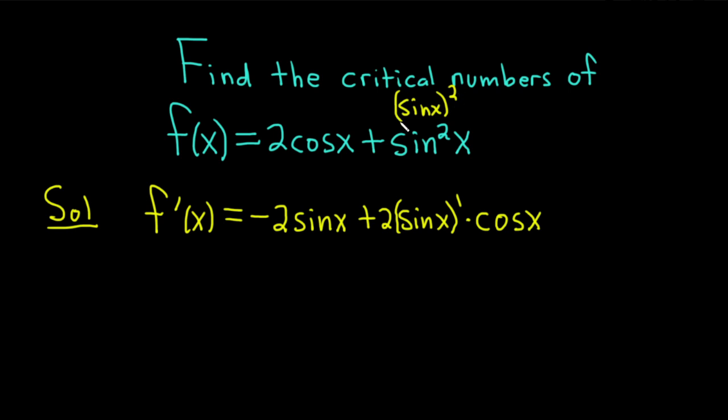And then times the derivative of the inside function, while the derivative of sine is cosine. So again we used the chain rule. We brought down the 2, left the inside function untouched, then multiply by the derivative of the inside.